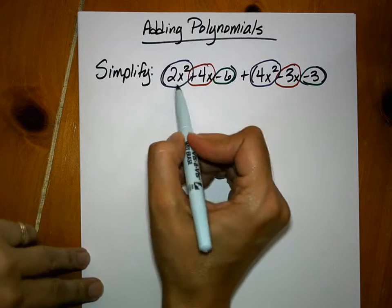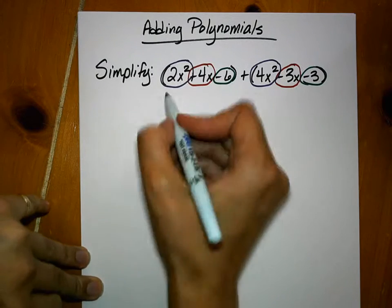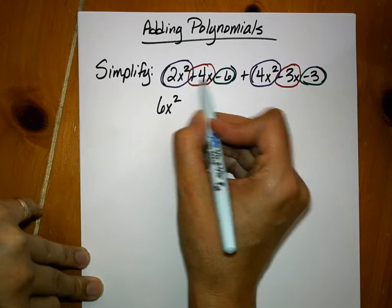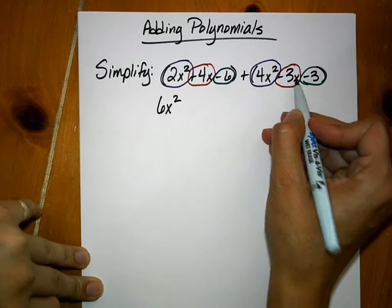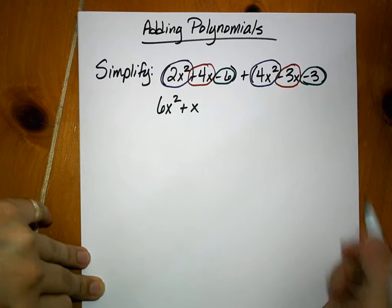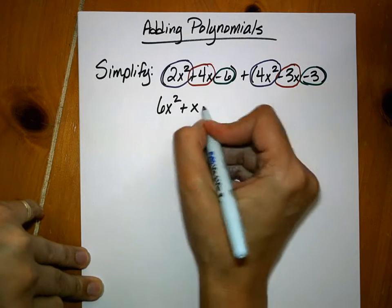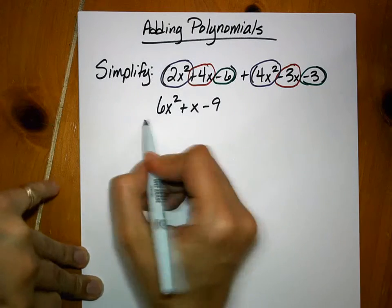So we will simply say 2x squared plus 4x squared is 6x squared. Positive 4x minus 3x is positive 1x. Negative 6 plus negative 3 is negative 9. That's one method.